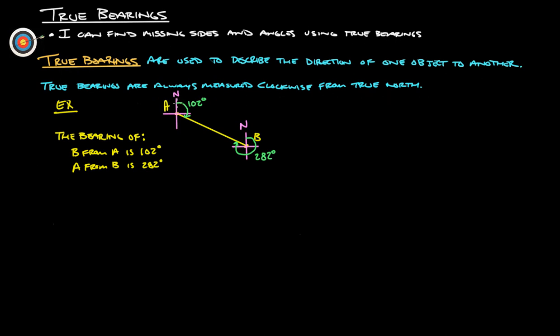First thing, true bearings are used to describe the direction of one object to another. True bearings are always measured clockwise from true north. And you'll often hear this in open water navigation. So if there was a boat heading this direction on this yellow line, they would say that they were heading at a bearing of 102 degrees because due north is here. You would go clockwise from due north until you hit that line of travel, and that is 102 degrees.